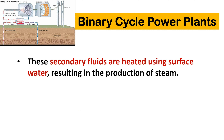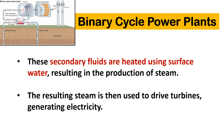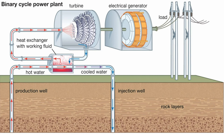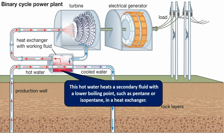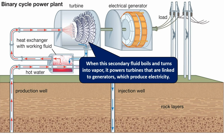These secondary fluids are heated using surface water, resulting in the production of steam. The resulting steam is then used to drive turbines generating electricity. Binary cycle power plants operate by pumping hot water from underground reservoirs to the surface through production wells. This hot water heats a secondary fluid with a lower boiling point, such as pentane or isobutane, in a heat exchanger. When this secondary fluid boils and turns into vapor, it powers turbines linked to generators which produce electricity.